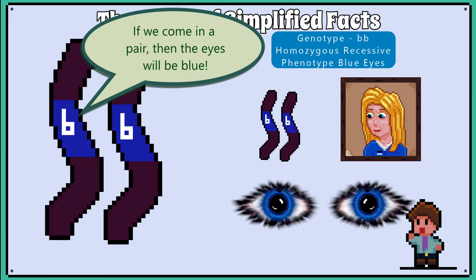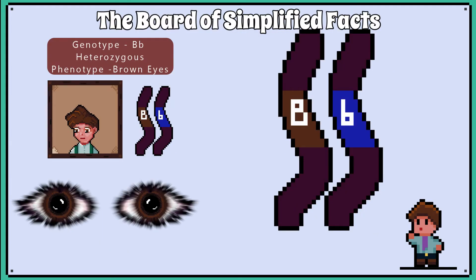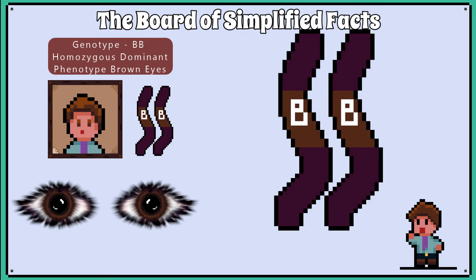In our eye colour example, the allele for brown eyes is dominant, and the allele for blue eyes is recessive. This means blue-eyed people have a genotype that is homozygous recessive, which is represented by two lowercase letters. Brown-eyed people can have a genotype that is heterozygous or homozygous dominant.